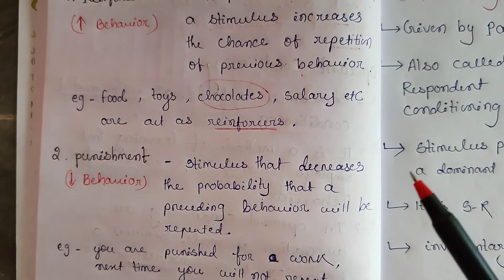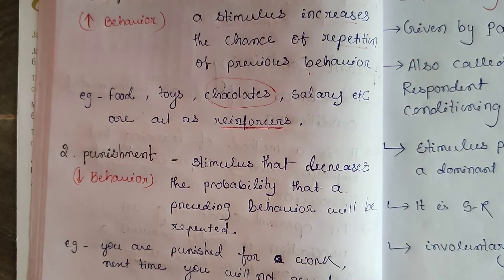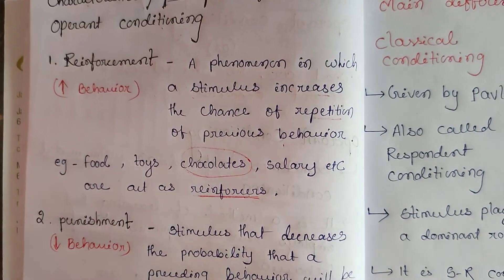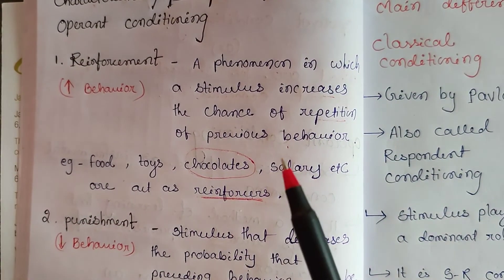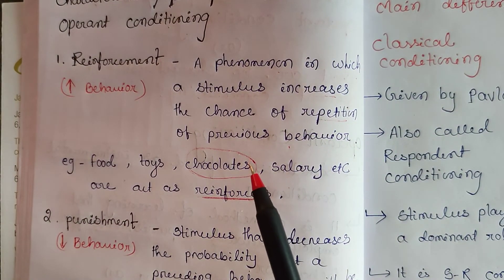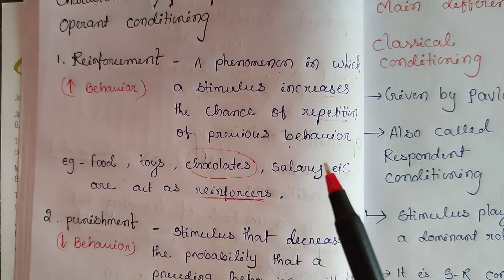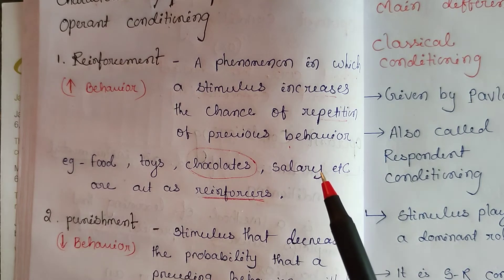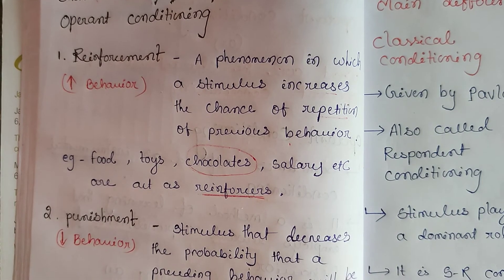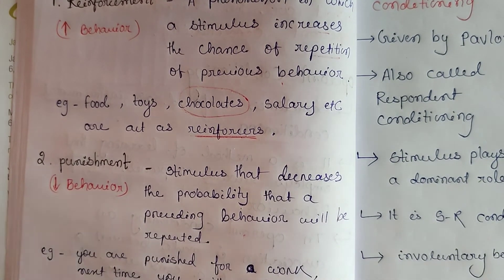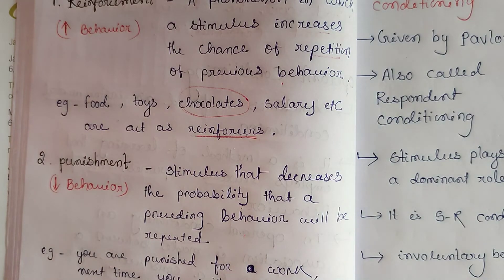For both reinforcement and punishment, there are two types each: positive reinforcement, negative reinforcement, positive punishment, and negative punishment. However, I am only explaining what is within the syllabus.